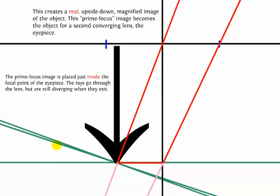And here it is. The green rays cross right here. They actually cross each other, and so this is a real image, and where they cross is the tip of the image. We call this the prime focus image. It's a real image. It's upside down, and it is highly magnified.